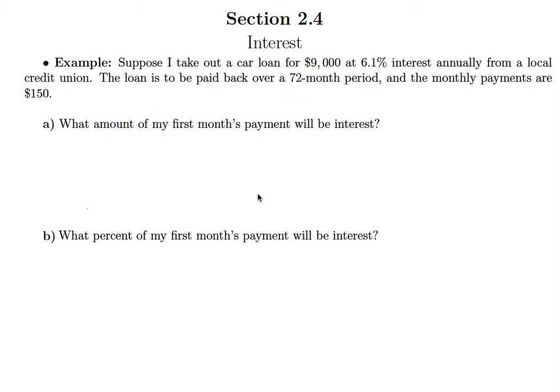So the idea here is that this $150 goes toward two things. First of all, it has to pay any interest that's built up over that one month. And then after that, it can pay off the balance of the loan or the principle of the loan and go toward working that down. Part A says, what amount of my first month's payment will be interest? Since it's asking us how much that first month is interest, we need to calculate the interest that would be built up in that first month.